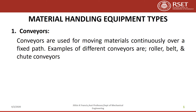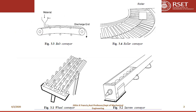Material handling equipment types. The first type is a conveyor. Conveyors are used for moving materials continuously over a fixed path. The different kinds of conveyors can be of roller type, belt type, chute conveyors, etc. These are the different types of conveyors.